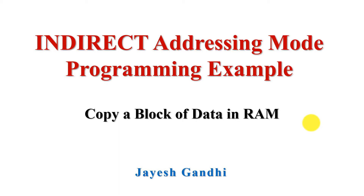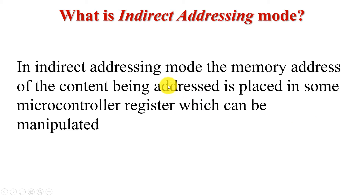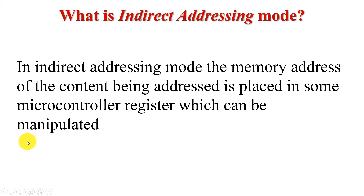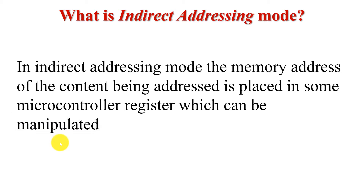First of all, let us understand what is indirect addressing mode. In indirect addressing mode, the memory address of the content being addressed is placed in some microcontroller register which can be manipulated. This last word, 'manipulated', is important — you can change the value of these registers and hence change the addresses during the execution of the program.